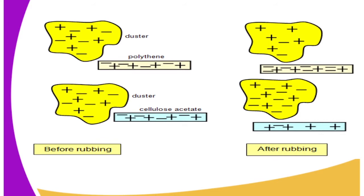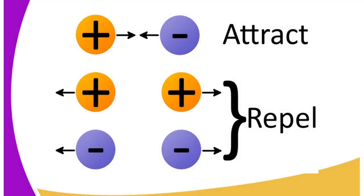That is why when we take a ruler, rub it over a surface, and bring it close to pieces of paper, the pieces of paper are attracted — because charges are induced upon rubbing. Before rubbing, the charges are not distributed evenly. But after rubbing, the charges become distributed evenly, and that causes them to either attract or repel. Like charges repel and unlike charges attract.